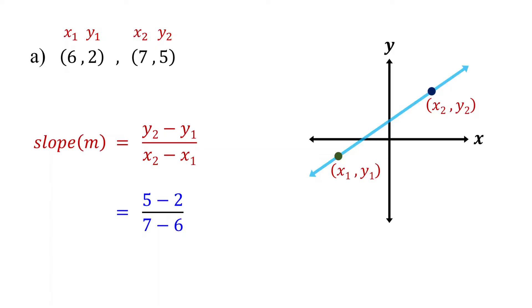Now simplify. 5 minus 2 is 3, and 7 minus 6 is 1. This equals 3, so the slope of the line passing through these two points is 3.